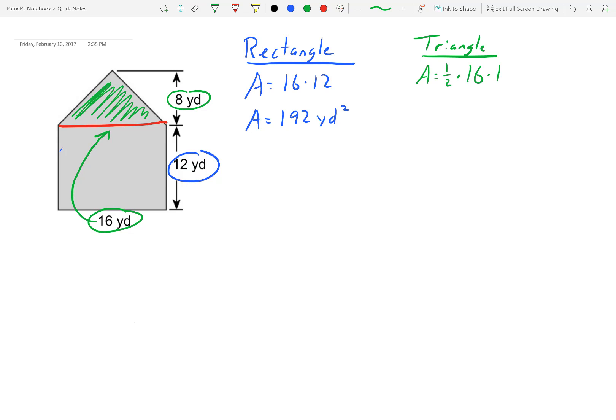So I'm going to do one half times 16, and I know the height is 8. They give me the height there. So one half times 16 is 8, so I get 8 times 8. And now I get 64 yards squared.